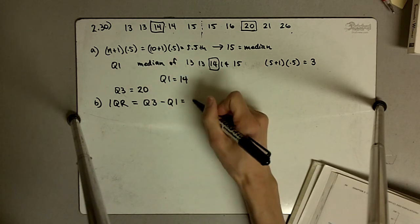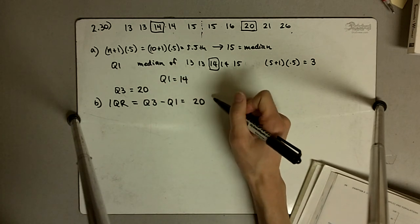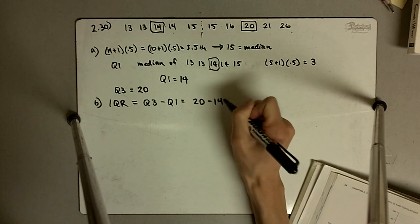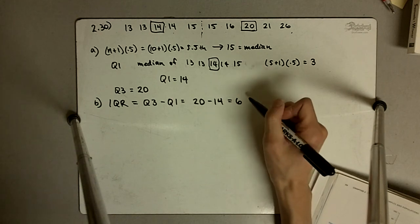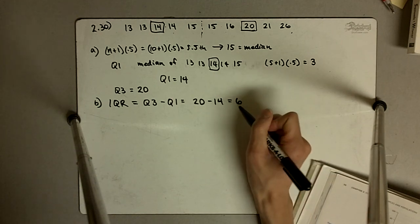And so in this case Q3 is 20, Q1 is 14. So 20 minus 14 is equal to 6, the IQR is just 6.